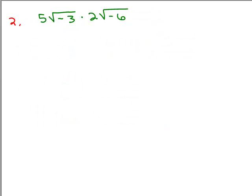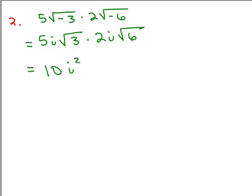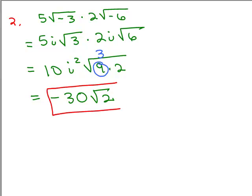Here's problem number 2. This is a multiplication problem. Anytime we have a square root of a negative number, we can take out i. So that's 5i square roots of 3, and this is 2i square roots of 6. Now, I've got positive numbers under both square roots, so those can be multiplied together. On the outside, I've got 10i squared. So 10i squared times the square root of 18 — 3 times 6 is 18 — and I'll write that as 9 times 2. Square root of 9 comes out as a 3. So that's 10 times i squared, which is negative 10 times 3, giving negative 30 square roots of 2. That's problem number 2.